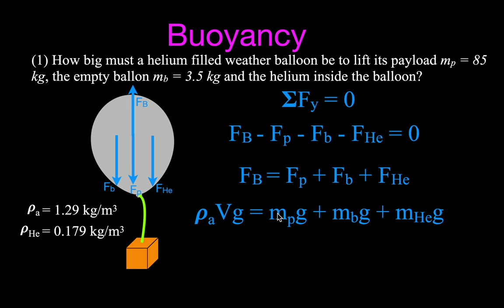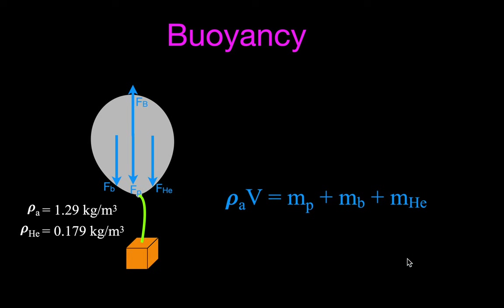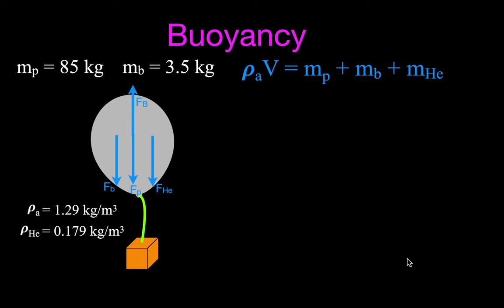From Newton's second law, the right-hand side becomes the mass of the payload times g, plus the mass of the balloon times g, plus the mass of the helium times g. Since g appears in all terms, we cancel it out and are left with: density of air times volume equals the mass of the payload plus the mass of the balloon plus the mass of the helium.